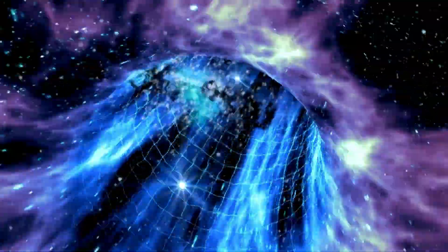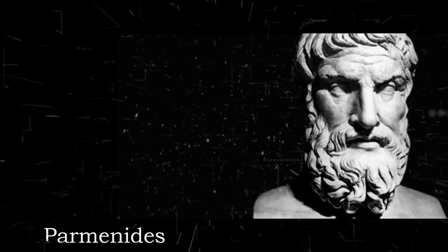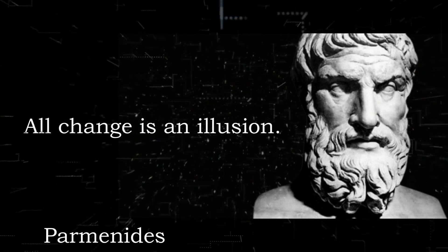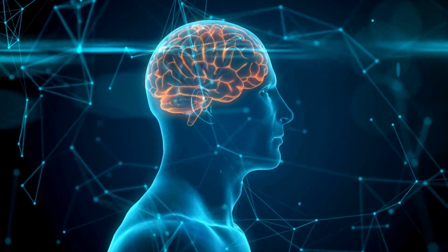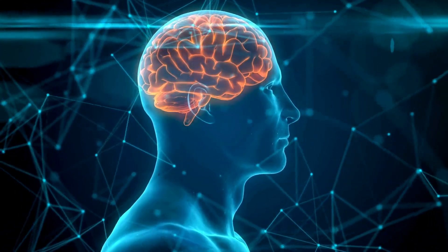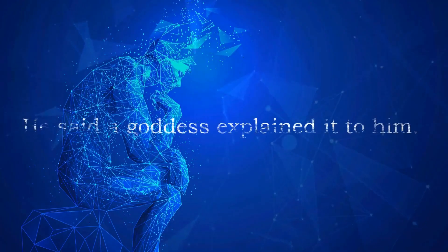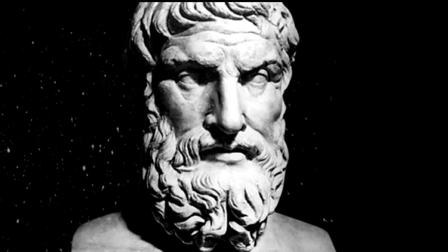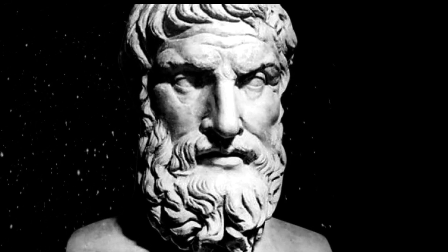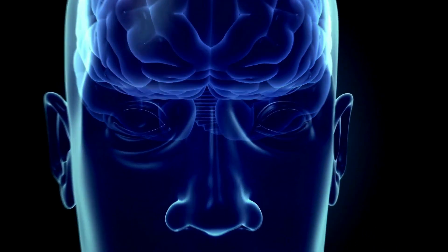This view somewhat echoes the teachings of Parmenides, an ancient Greek philosopher who said that all change is an illusion. He believed that our senses show us the way of seeming, and that only logic and reason can reveal the way of truth. Parmenides didn't come to this conclusion by doing math — a goddess explained it to him. But he was a key figure in the history of science because he started using rigorous deductive reasoning and trusted it even when it led to conclusions that contradicted sensory experience.